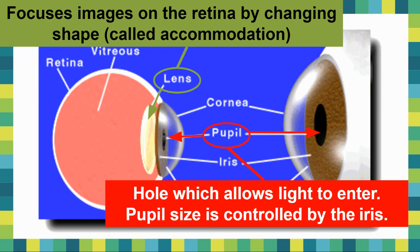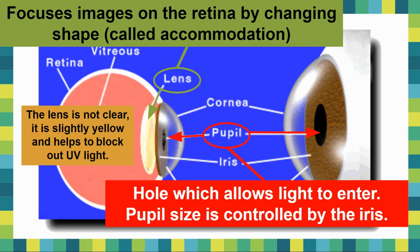As you get older, accommodation gets harder and harder because the lens is made out of proteins, and as it gets older it becomes less and less flexible. That's why most people in their later adult lives need glasses or reading glasses — their lens can't accommodate properly. The lens is also not clear; it's actually slightly yellowish in color, which helps filter UV light so it doesn't burn the retina.